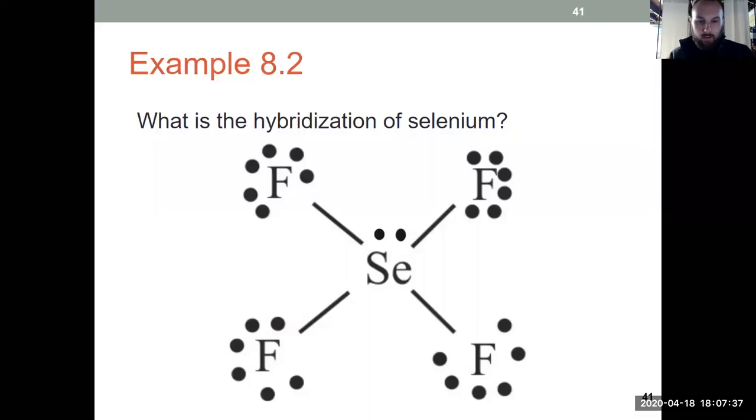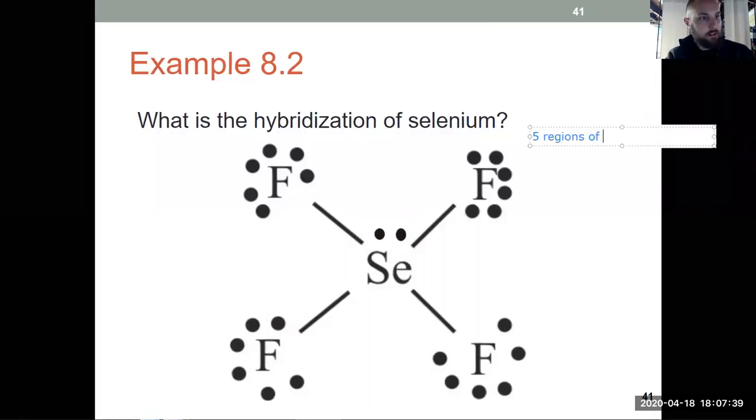So I've got five regions of electron density. And there's only five possible answers for hybridization. They're sp, sp2, sp3, sp3d, and sp3d2.